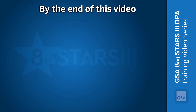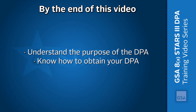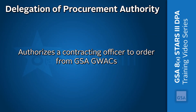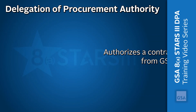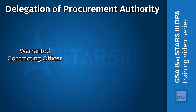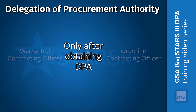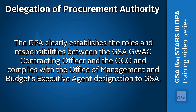By the end of this video, you should be able to understand the purpose of the DPA and know how to obtain your DPA. DPAs authorize a contracting officer to order from the designated GSA GWAC. A warranted contracting officer becomes an Ordering Contracting Officer, or OCO, only after obtaining a DPA. The DPA clearly establishes the roles and responsibilities between the GSA GWAC contracting officer and the OCO, and complies with the Office of Management and Budget's Executive Agent designation to GSA.